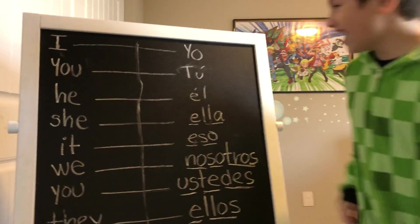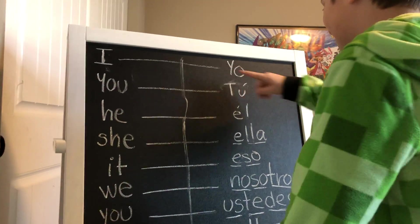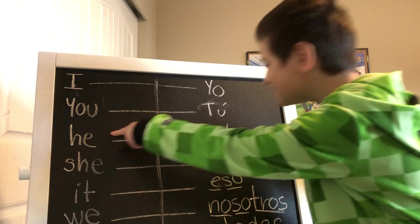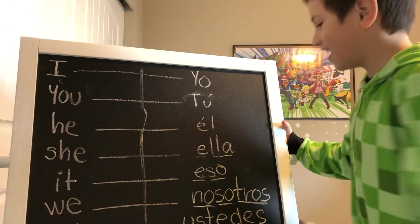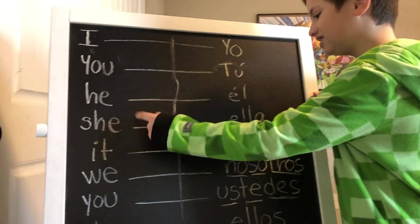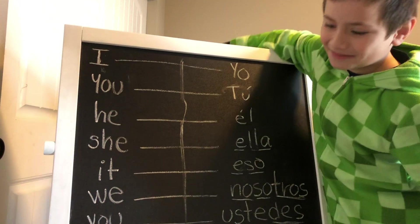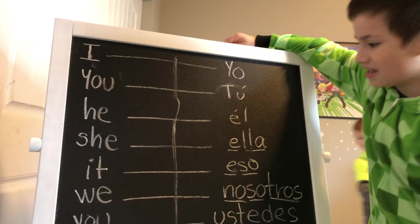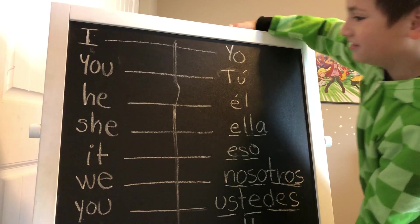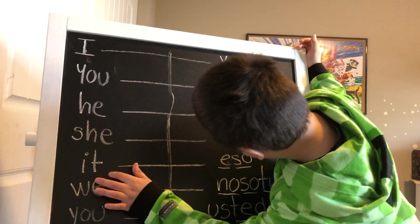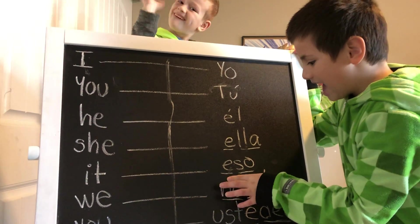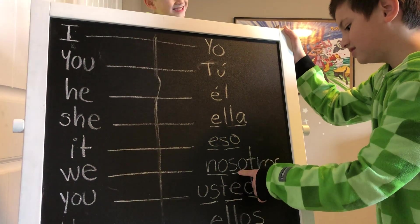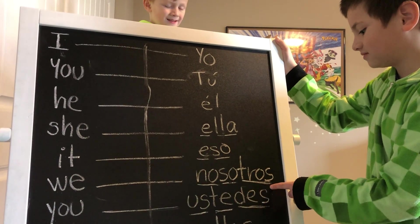Read it for me. I — yo, you — tu, he — el, she — ella, it — eso, we — nosotros.